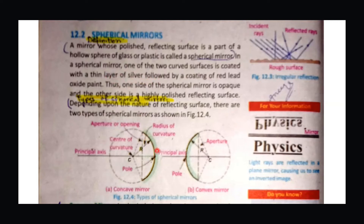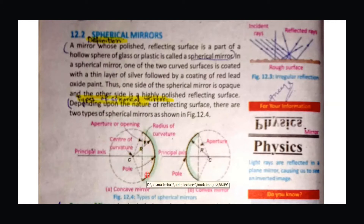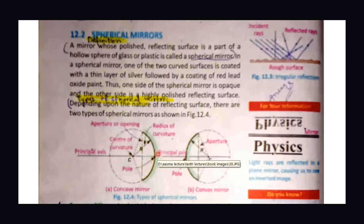We coat these surfaces with a thin layer of silver, and then we coat them with lead oxide paint so that it can come completely to a mirror condition. One side of the spherical mirror is opaque, and we make a highly reflecting surface so that it can produce proper reflection.